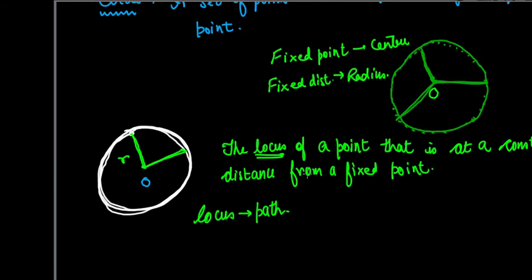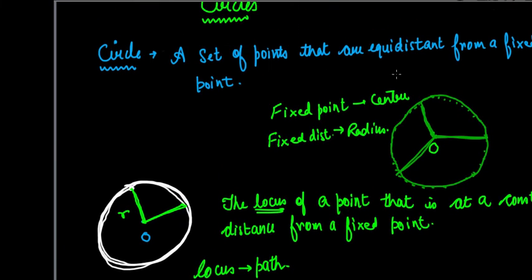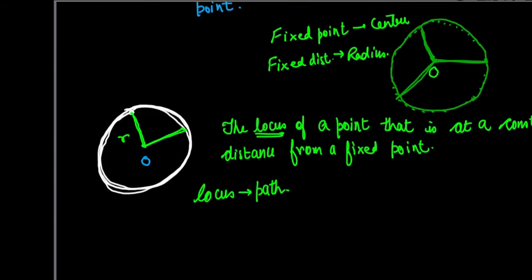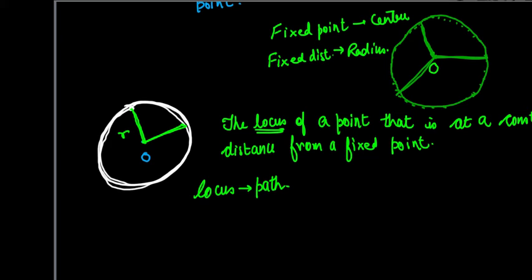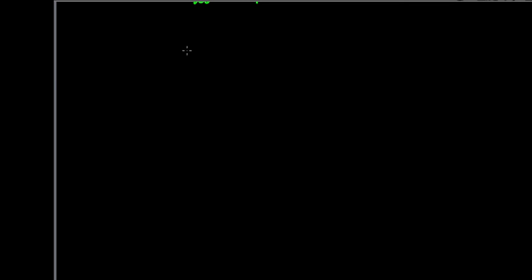So there are two ways to define a circle. One: it is a set of points that are equidistant from a fixed point. Two: it is the locus of a single point that is at a constant distance from a fixed point. That fixed point is the center and that constant distance is the radius of the circle. That is a basic introduction and definition of a circle.